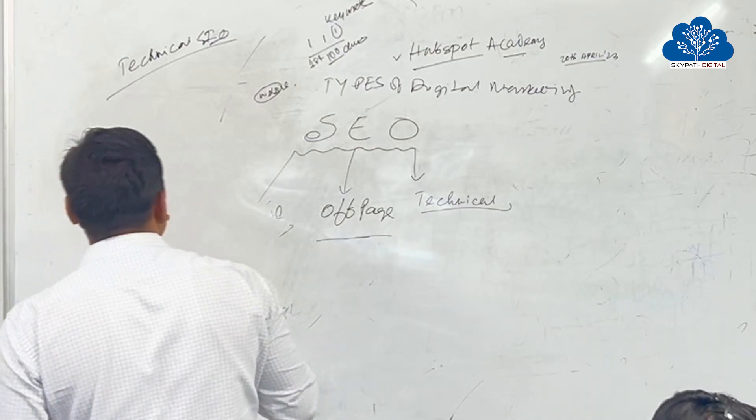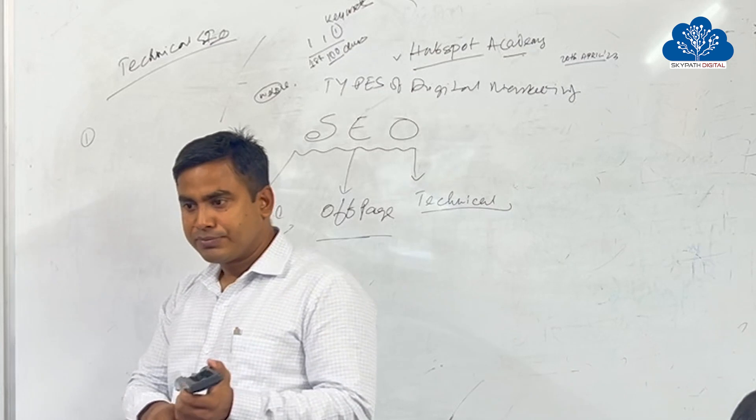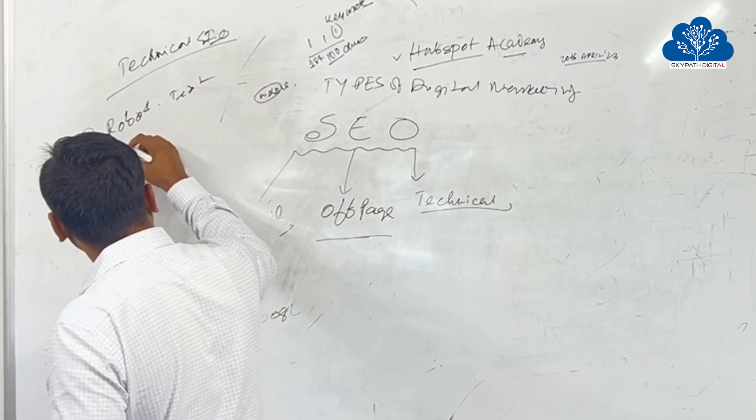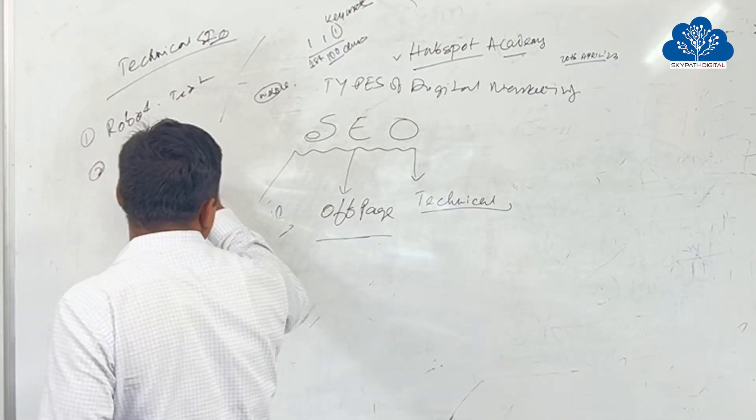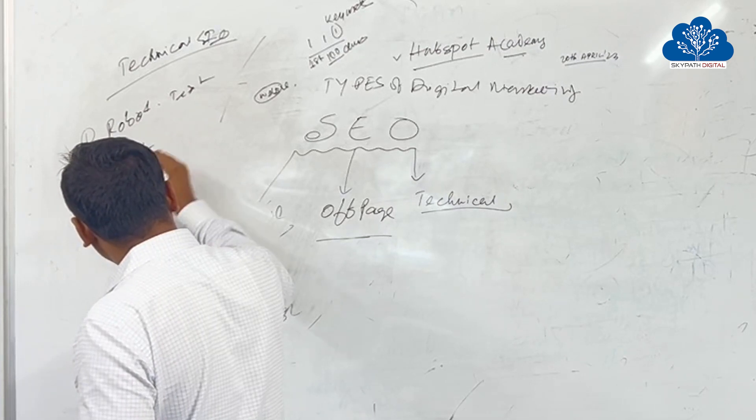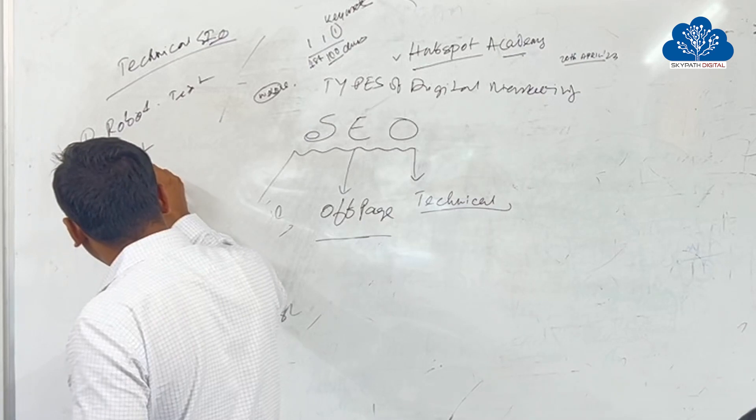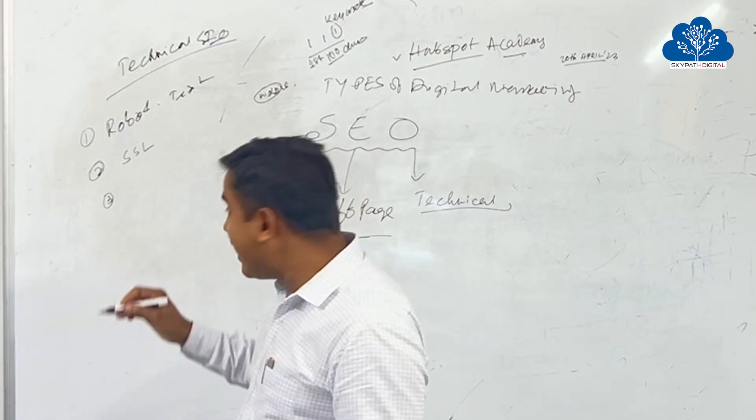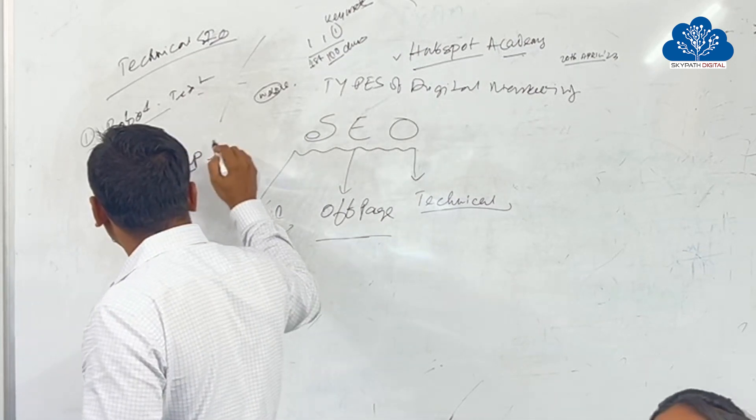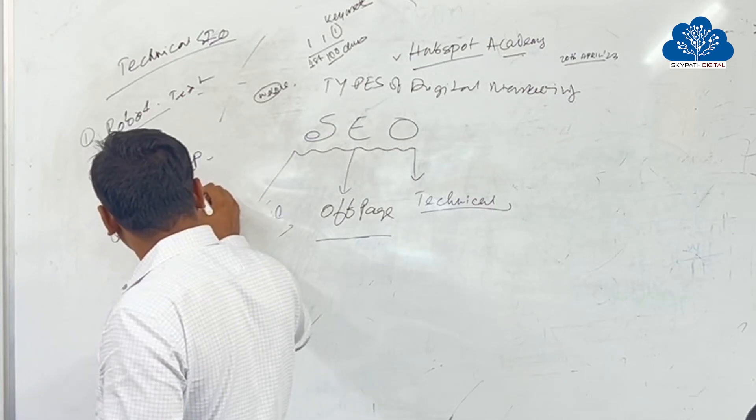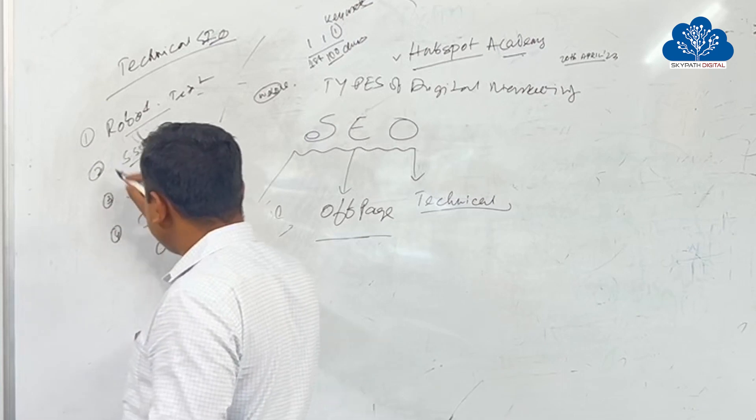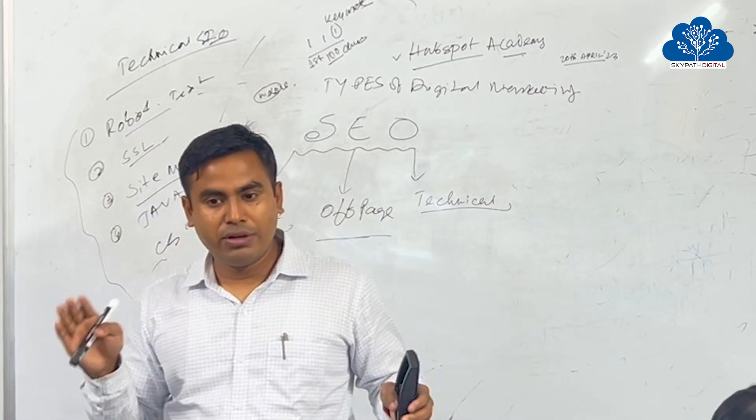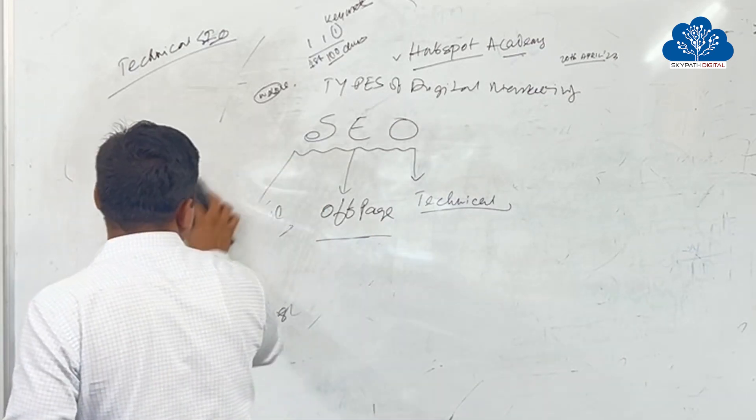Then technical SEO. Technical SEO is mainly all about the robot.txt, the robot.txt, then SSL certificate, SSL certificate. These are the technical part that are taken care of by the development team. This should be proper so that Google will be able to crawl your website. This is the mainly three parts of SEO.